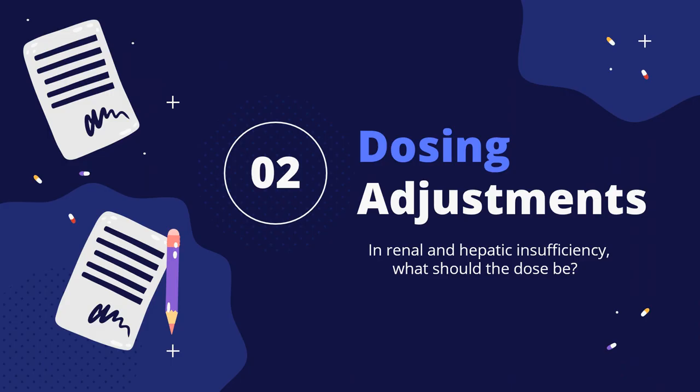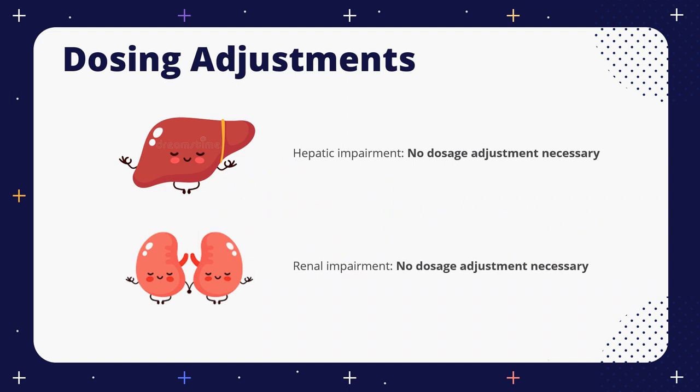Next, we have dosing adjustments. In renal and hepatic insufficiency, what should the dose be? Good news — for both hepatic and renal impairment, there are no dosage adjustments that are required.